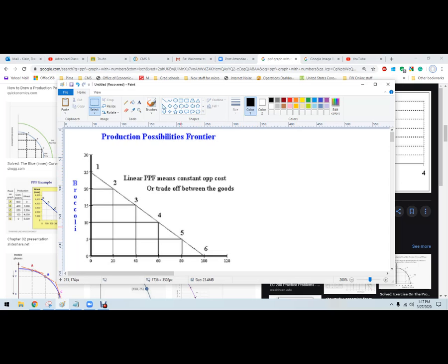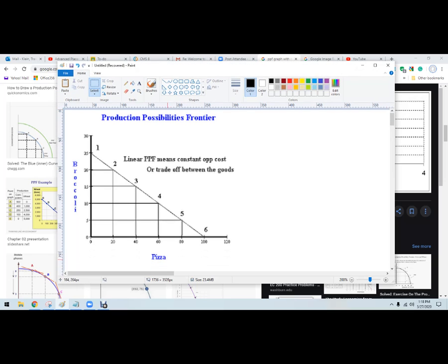So what we're doing here, we've already graphed these. We've got broccoli and this one is pizza. And so here is what is possible. Any point along this line here is possible to produce.